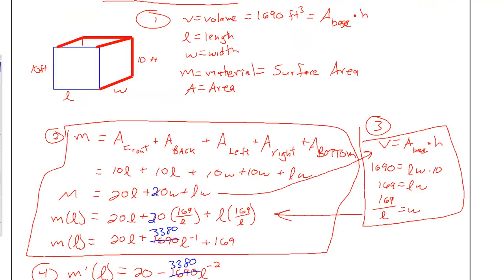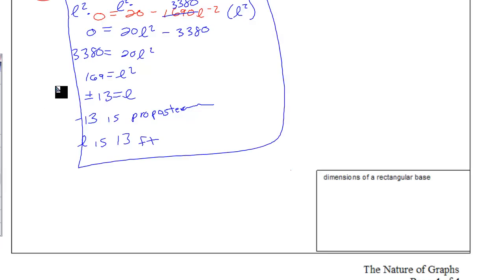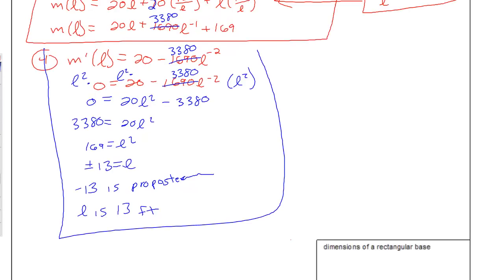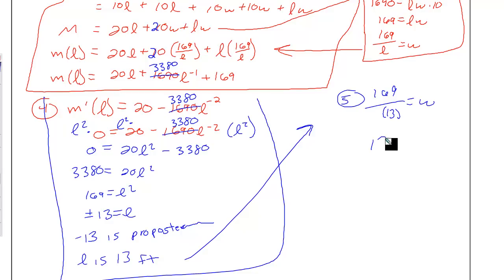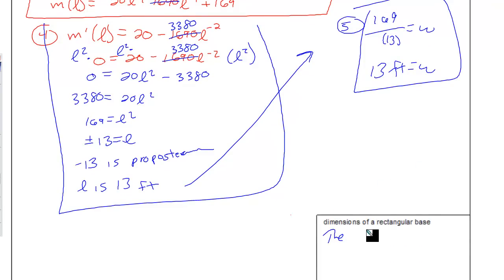We're talking about feet here. To find both dimensions, go back and substitute L equals 13 into W equals 169 divided by L: 169 divided by 13 gives W equals 13 feet. So the dimensions of the rectangular base are 13 feet by 13 feet.